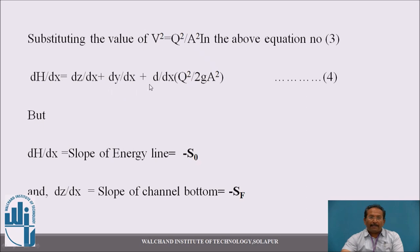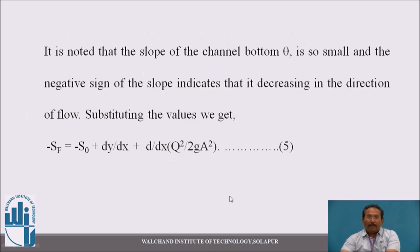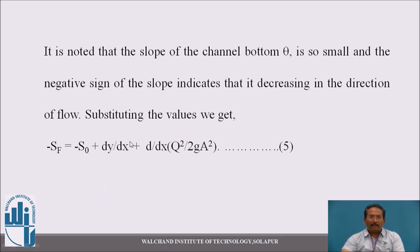Here, dh/dx is the slope of the energy line, which equals -S_f. And dz/dx is the slope of the channel bottom, which equals -S₀. The negative sign is given because as we travel in the x-direction, the head decreases. The negative sign indicates that the slope is decreasing in the direction of flow.